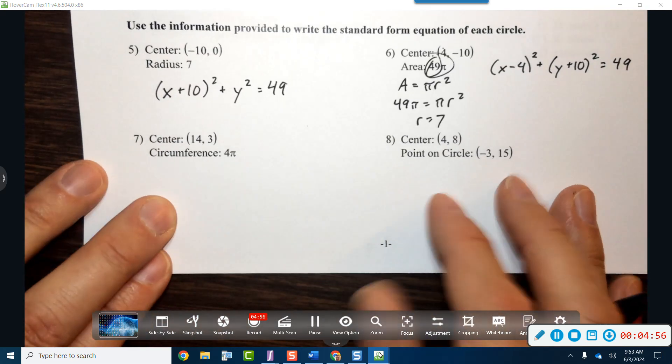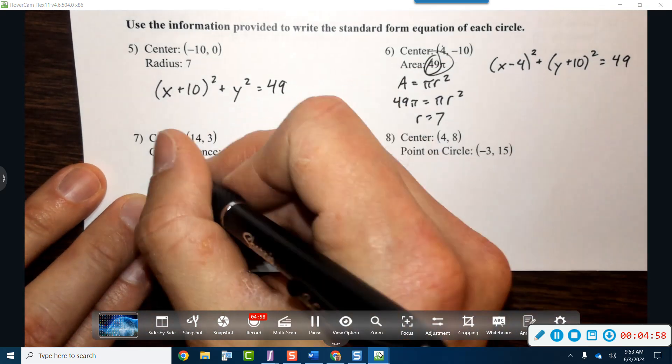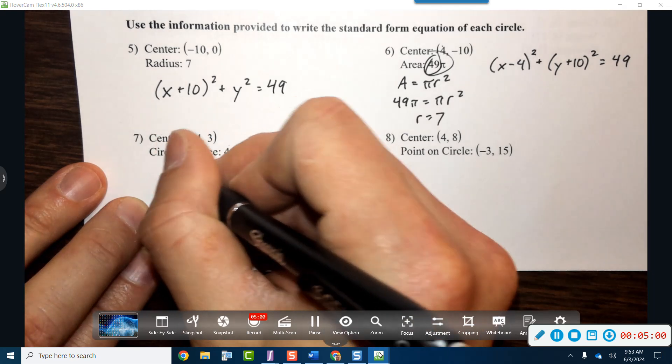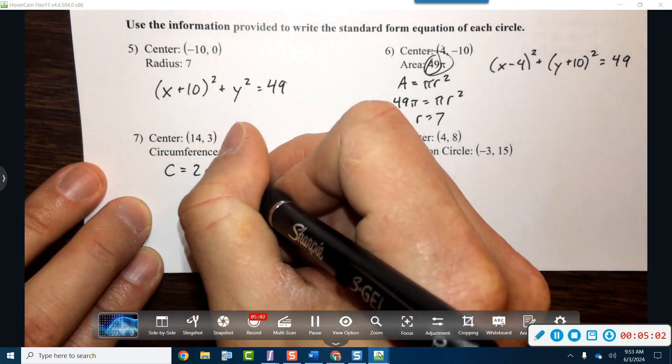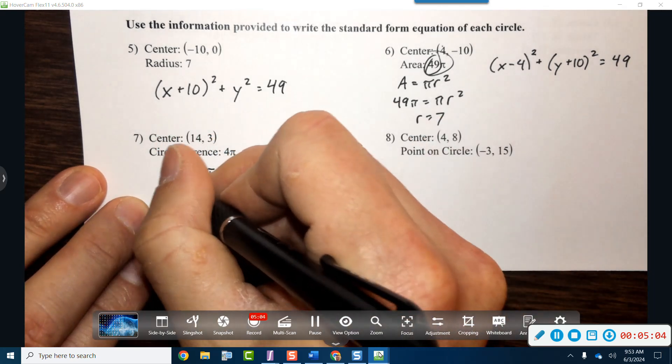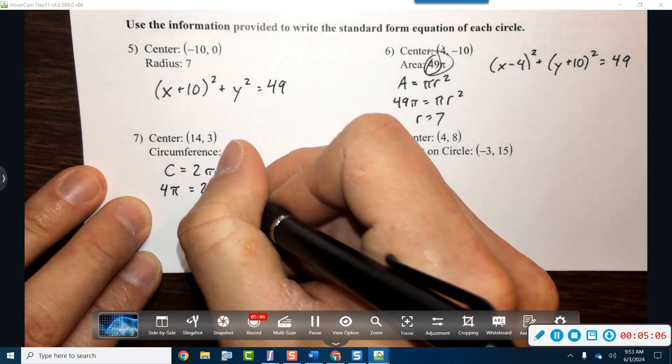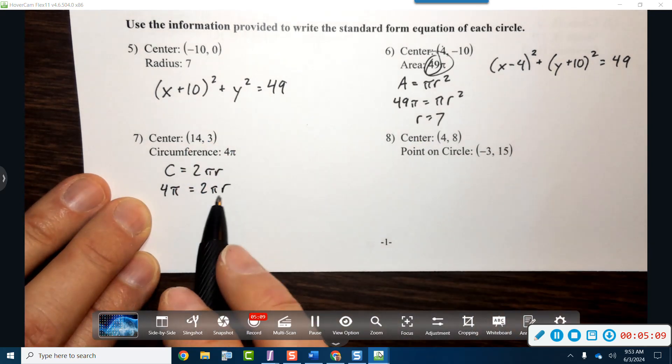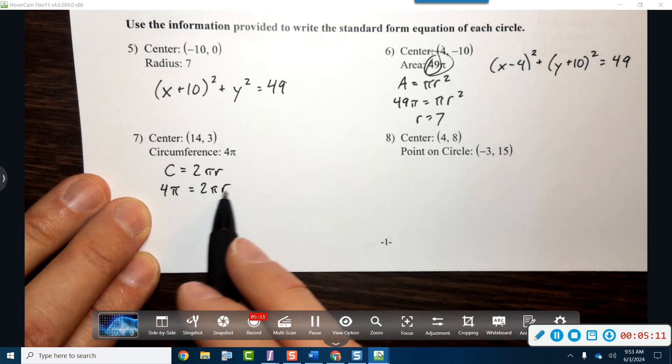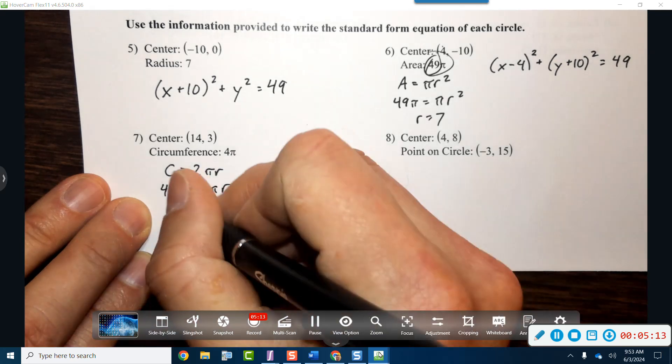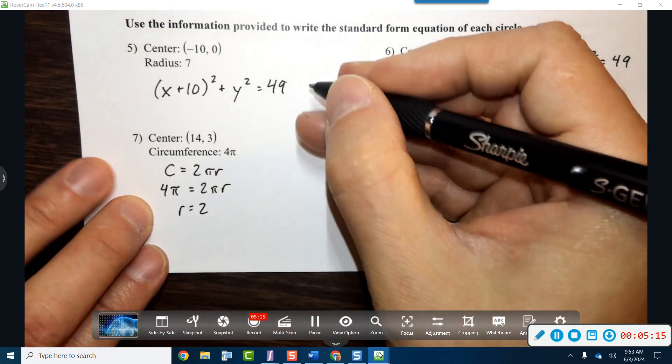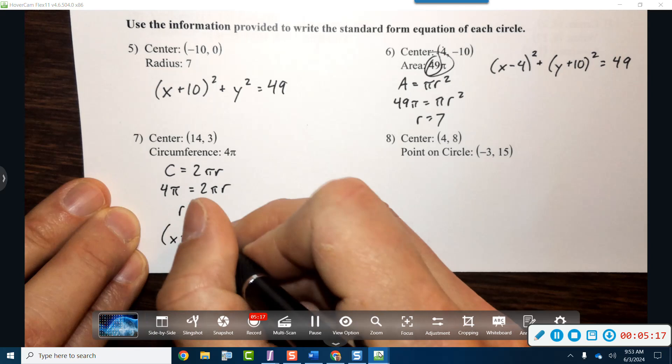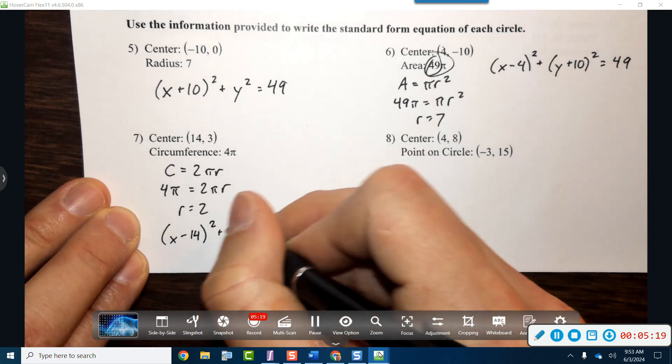Here we have another center, but here we have the circumference and we said that the circumference equals 2π r. So if that's 4π, you can see here is all it takes for the r to become in 2π to become 4π, r equals 2. So we've got x minus 14 squared plus y minus 3 squared will equal 4.